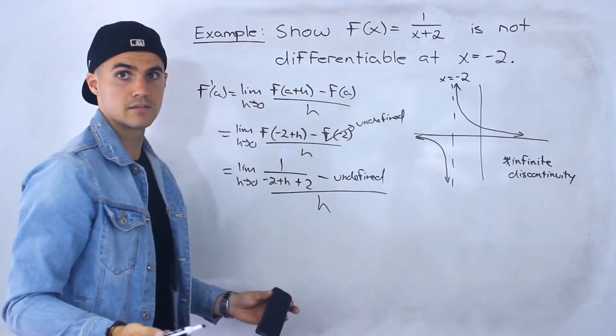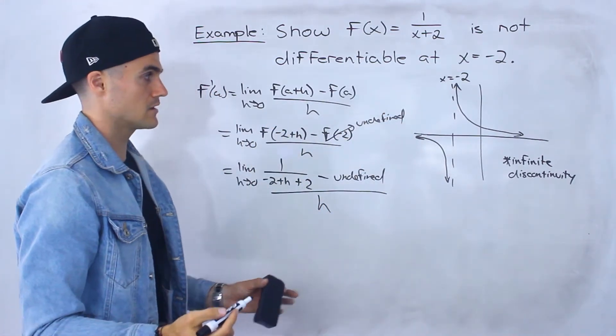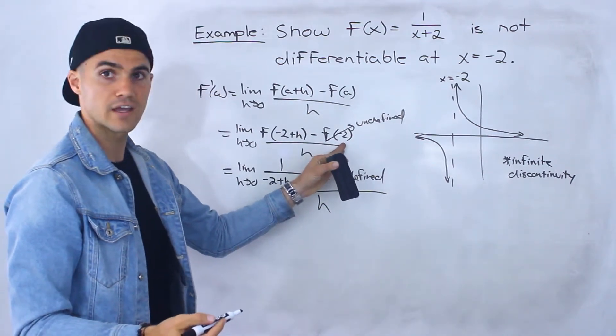Then it means that this limit doesn't exist. And you can just mention that at that x value of negative 2...